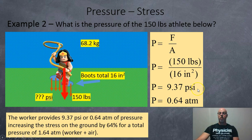And when you divide that by the 14.69 from the other slide, that's 0.64 atmospheres. So this worker provides 9.37 psi, or 0.64 atmospheres, increasing the stress on the ground by around 64% for a total pressure of 1.64 atmospheres. One from the air, 0.64 from the athlete. A little typo there.